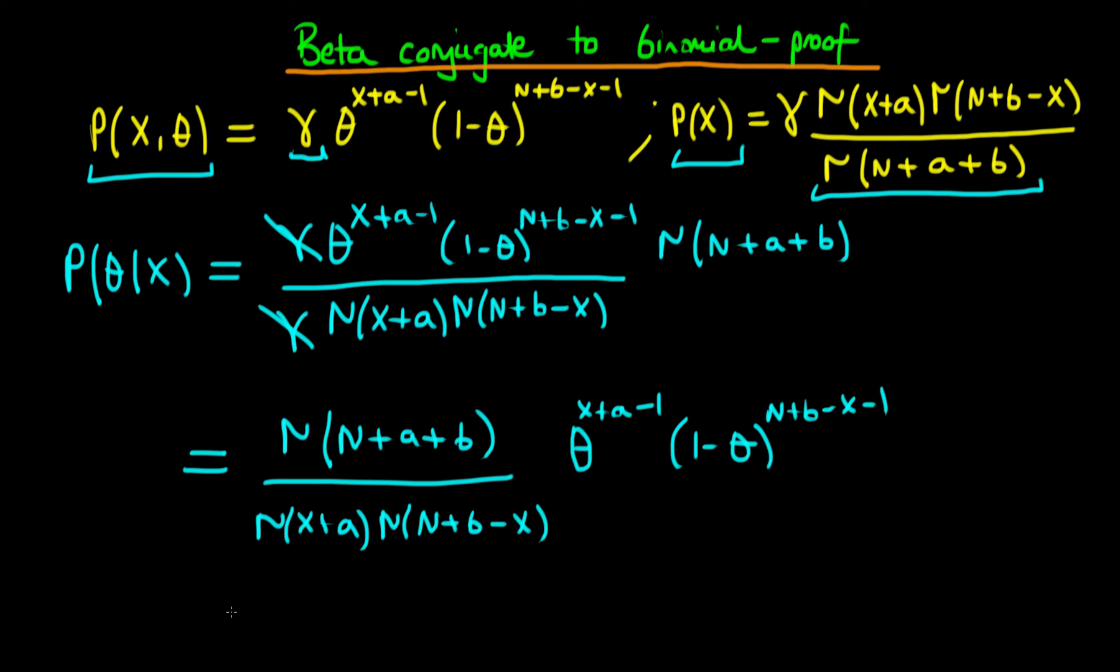And we can see pretty quickly that this is a beta distribution. This is exactly the same form as we had before, where the numerator was the gamma of a plus b, but now we've got a new a, which is x plus a, and a new b, which is n plus b minus x. So this is exactly a beta distribution with parameters x plus a and n plus b minus x.